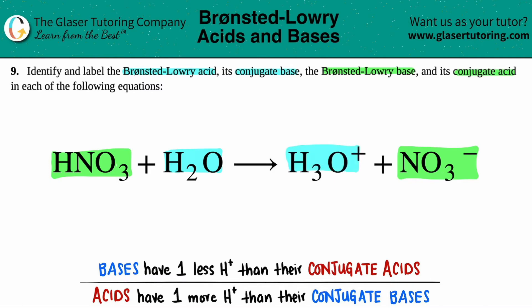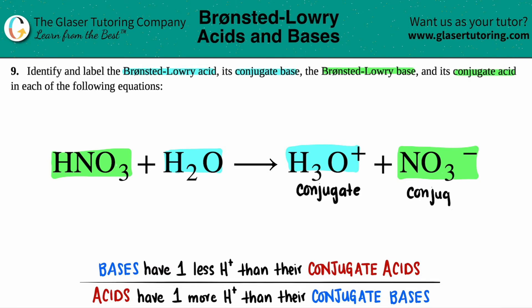The second easy thing to do is to just write the word 'conjugate.' The conjugates are always going to be on the product side. So right off the bat, I'm going to say these have to be conjugates of some sort — I don't know whether it's the conjugate acid or the base yet, but these are your conjugates.